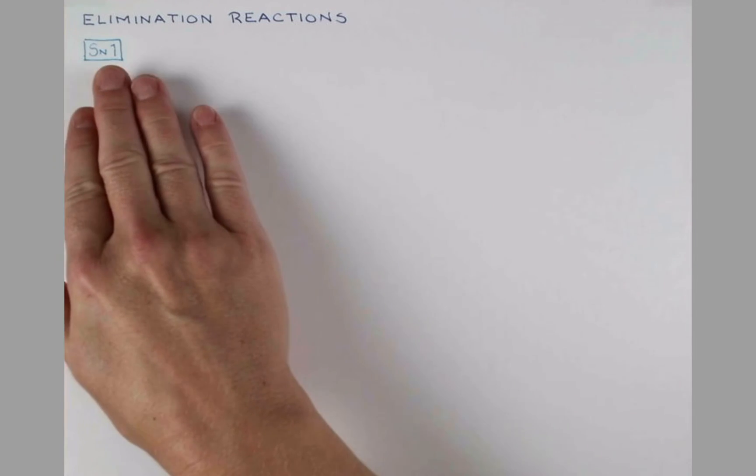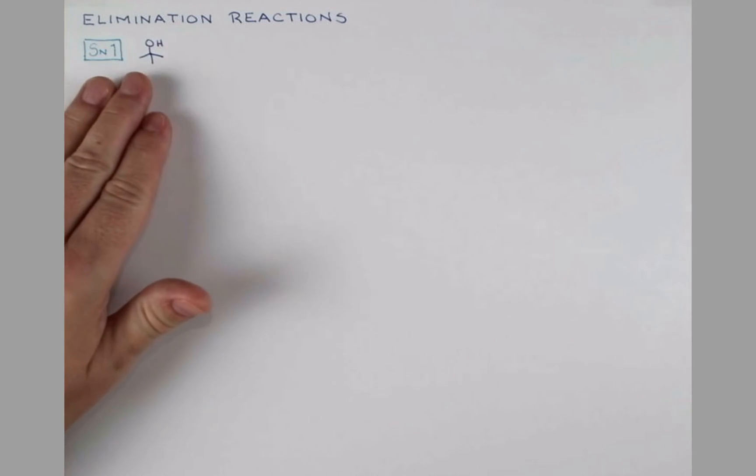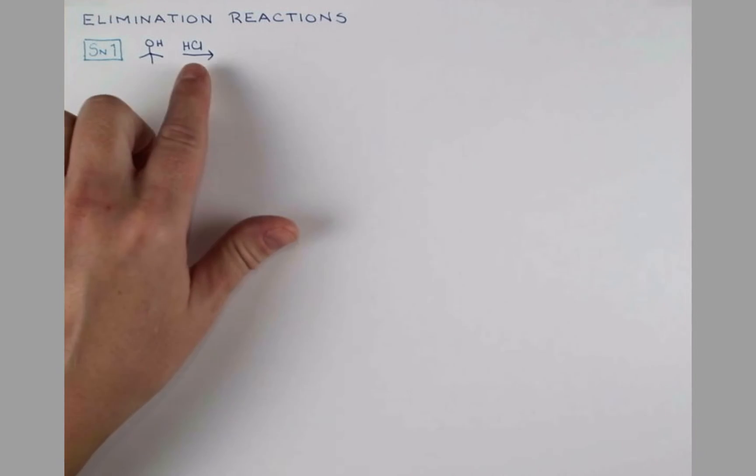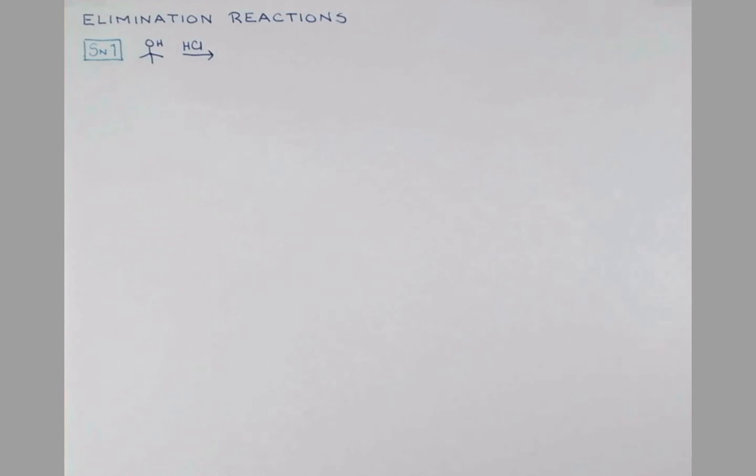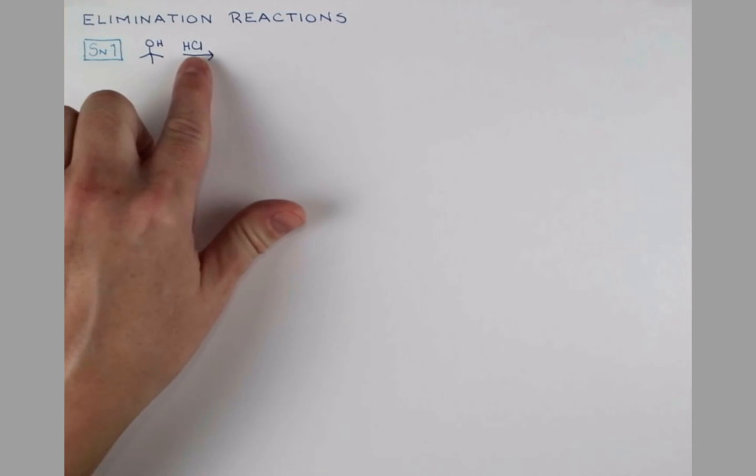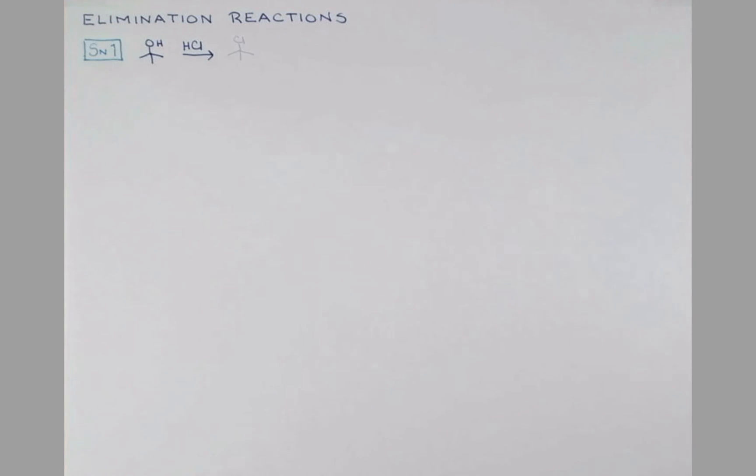Let's begin by briefly reviewing an SN1 reaction. This tertiary alcohol can be treated with HCl. This will result in the protonation of the alcohol to make it a good leaving group. An intermediate carbocation will form, and then the Cl- will come back and attack, producing this product.